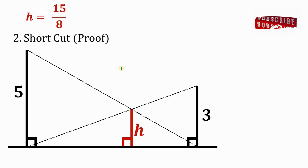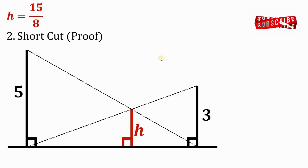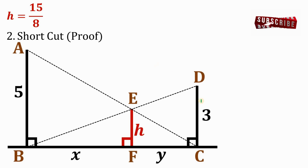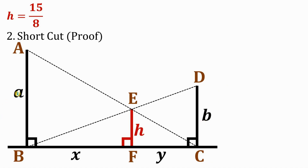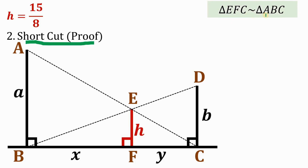Let's call the important points A, B, C, D, E, and F again. Instead of using 3 and 5, let's use variables A and B for any given length. The key is the similarity between triangle EFC and triangle ABC. Since they are similar, EF over AB equals FC over BC. On our diagram, EF is H, AB is A, FC is Y, and BC is X plus Y. Let's set this result aside.